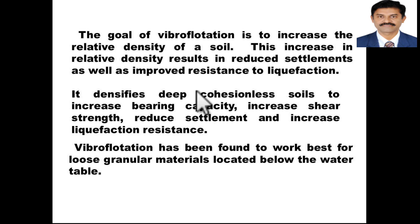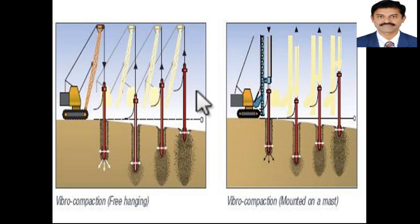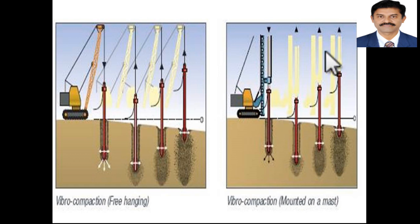Vibroflotation has been found to work best for loose granular soils located below the groundwater table. In the Vibroflotation technique, one may utilize three different variations. The first one is the Vibrocompaction method, which allows granular soils to be compacted. This method is used to compact sandy soils. This schematic shows how Vibrocompaction is done using a free-hanging vibro-probe or one mounted on a mast.